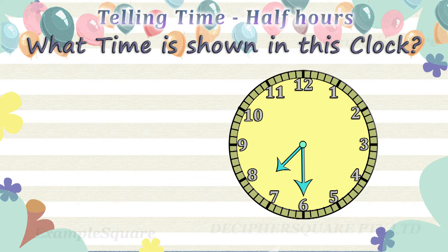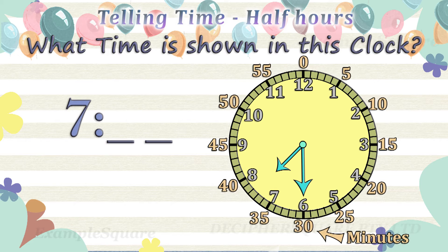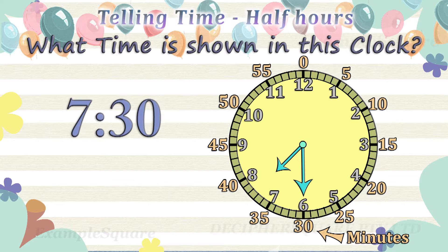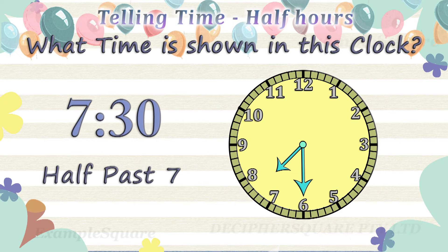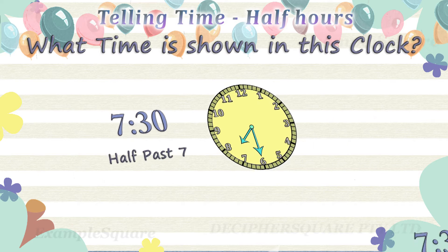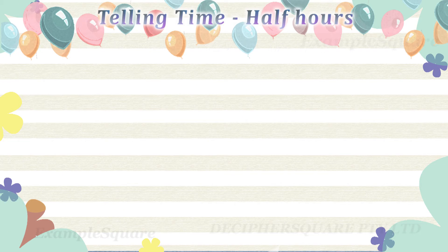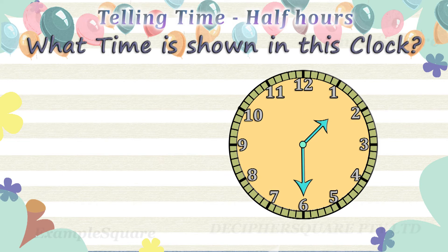What time is shown in this clock? The short hand, that is the hour hand, is pointing in between seven and eight, so the time is seven hours and some minutes. The long hand, that is the minute hand, is pointing at six — the minute hand is referring to thirty minutes. Thirty minutes is equal to half an hour. The time shown here is half past seven, or seven thirty.